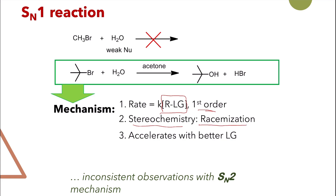Regarding stereochemistry, SN1 causes racemization. Racemization means if you start off with one isomer, whether S or R, you will end up with a mixture of both S and R products. SN1 is also accelerated with a better leaving group — the better the leaving group, the faster the reaction. Additionally, it can work well with weak nucleophiles, which is different from SN2. SN1 does not depend at all on the nucleophile, so even weak nucleophiles can react.